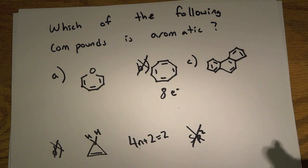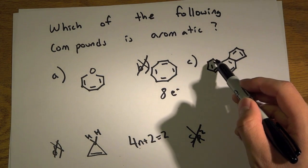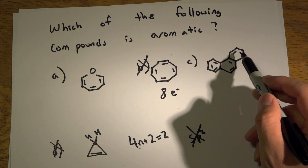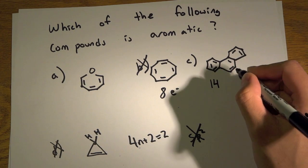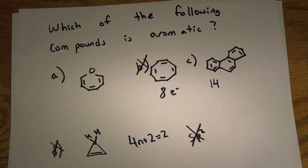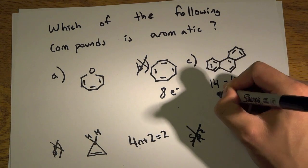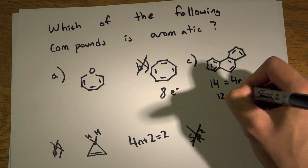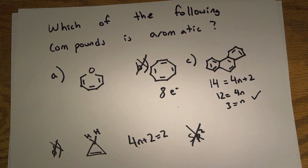Let's look at this next one and count the number of pi electrons. We have 7 pi bonds, which times 2 gives 14 pi electrons. So 14 equals 4n plus 2, meaning 12 equals 4n, and n equals 3 — a valid integer. So far that's good.